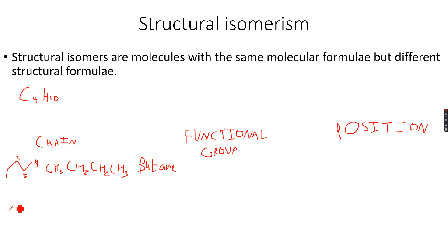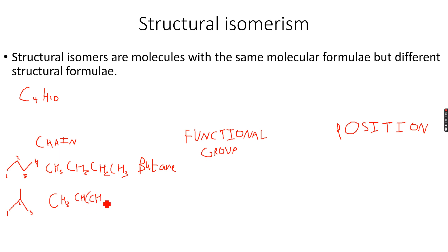Alternatively, we can have a structure where there are three carbon atoms in the main chain and the fourth carbon atom is in the form of a methyl group. This is CH3 CH(CH3) CH3, called two-methylpropane. If you count the carbon and hydrogen atoms in both compounds, you get the same number: four carbon atoms and ten hydrogen atoms.